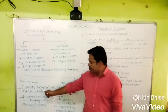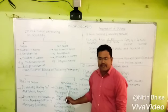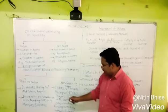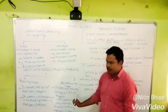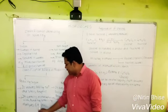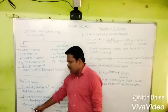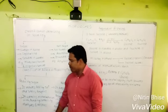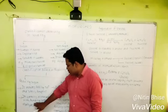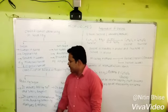Reducing sugars contain aldehydes and ketones as functional groups. When reducing, the sugar contains monosaccharides bonded with aldehyde and ketone groups.